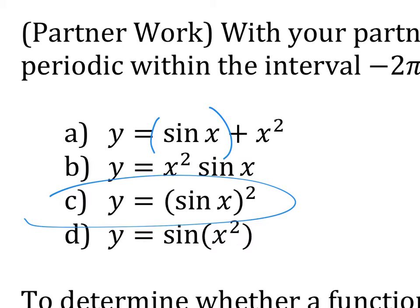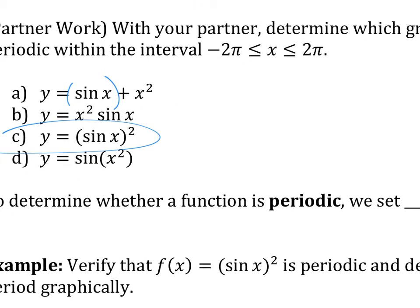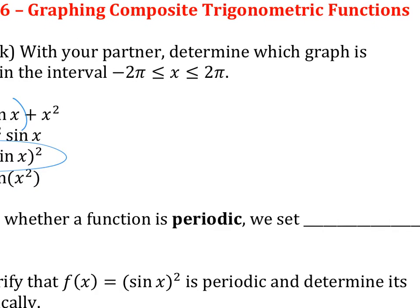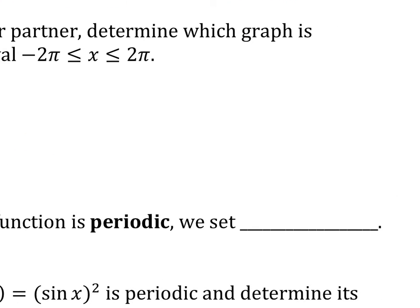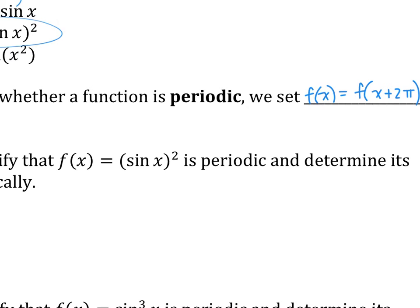So let's say you don't have a calculator, and you need to verify that it is periodic. How would you do that? It's kind of like the same idea as if you're proving something is odd or even. You have a formula. So if you want to check to see something is periodic or not, you make f of x equals to f of x plus 2π. So it's saying that if it is periodic, it should repeat itself in the same place after 2π.